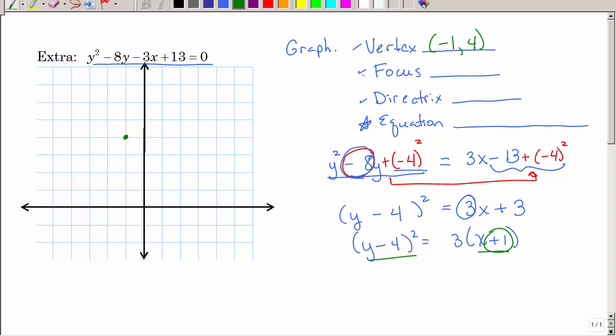Now, in order to find my focus and directrix, I do that from my graph. Let's go ahead and do that. So if I have, I know 4a is 3, and a is 3 fourths. a is the distance from the vertex to the focus, and the vertex to the directrix.